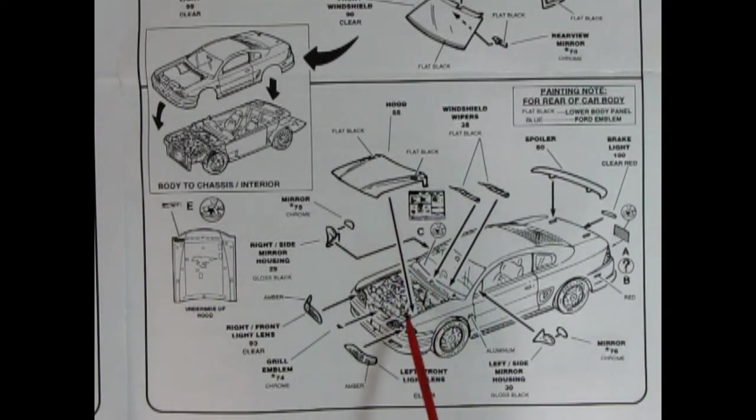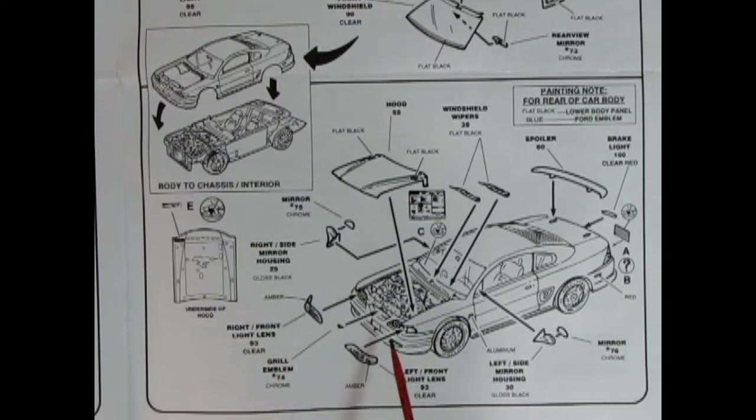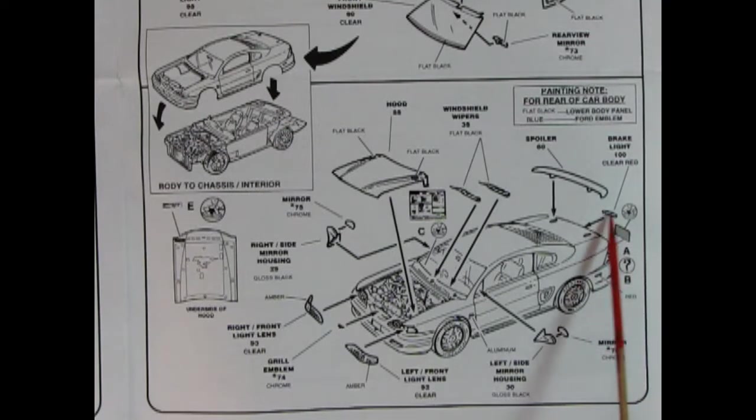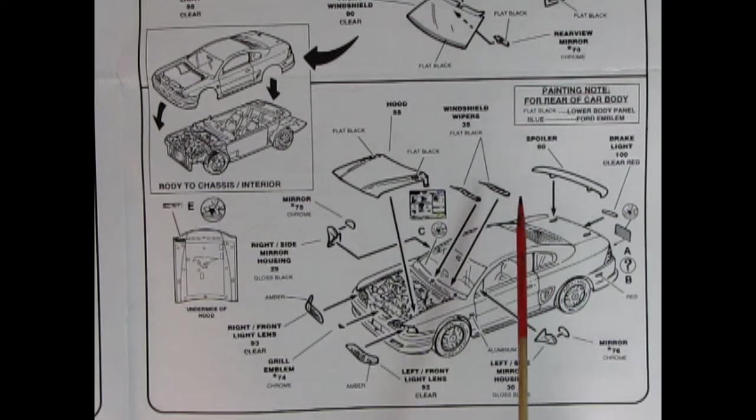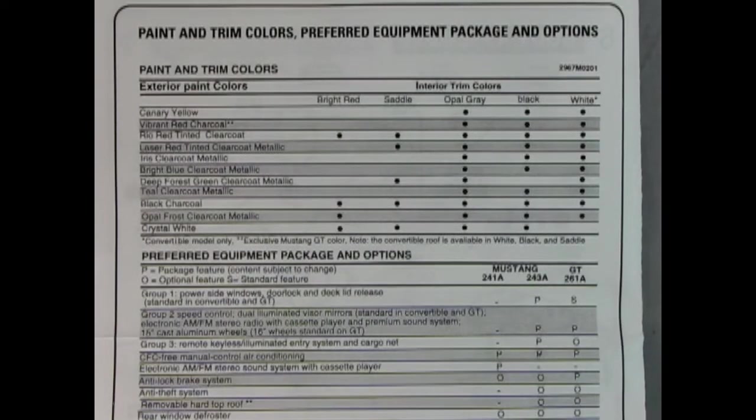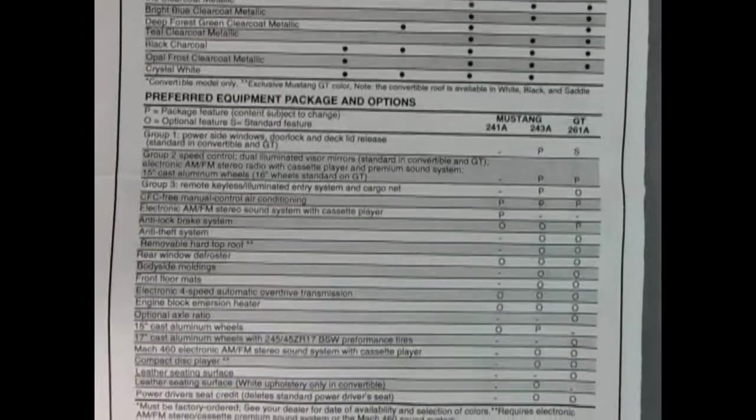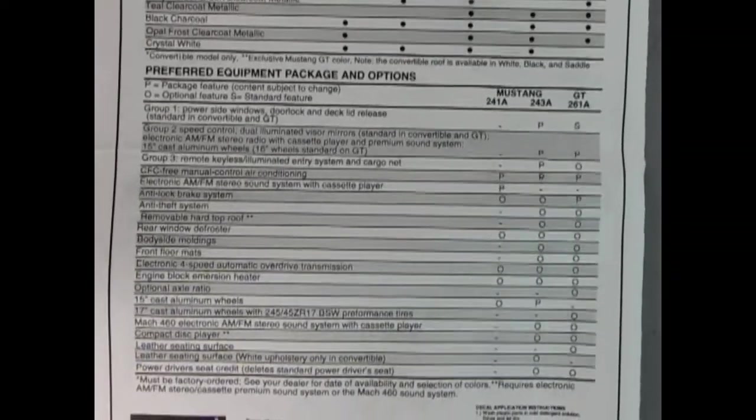Then we have our hood being dropped in. Underneath we have a decal there. There's our front headlamps going in, a little Mustang grille emblem right in there, then our right and left hand side mirrors with the chrome piece hooking in. We've got a decal for our license plate, a rear tail lamp that's in here, clear red spoiler dropping on and our windshield wipers. We also have this nice decal here which is a spec sheet for selling the car you can put in one of the side windows. Off the back we have a complete trim and paint color chart as well as down here where you can see the preferred equipment package and options.